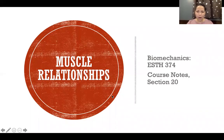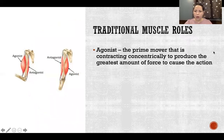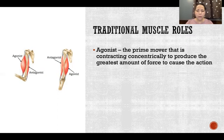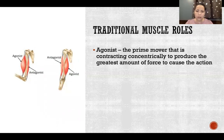In this video I'm going to discuss muscle relationships. Traditional muscle roles: we have the agonist, that's the prime mover — the muscle that's contracting concentrically to produce the greatest amount of force to cause the action. A concentric contraction is when the muscle is contracting and producing force while shortening. So the agonist in an action would be the biggest, strongest muscle producing the greatest amount of force, acting concentrically — shortening as it's contracting.